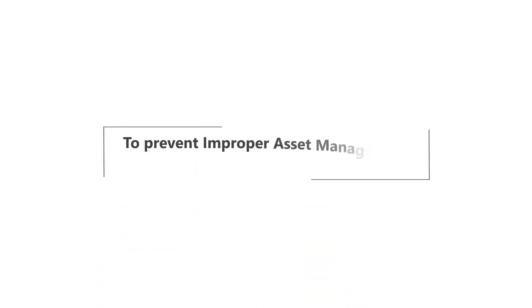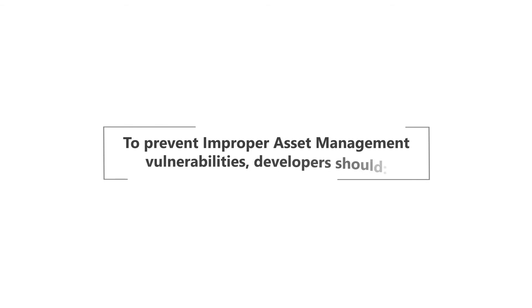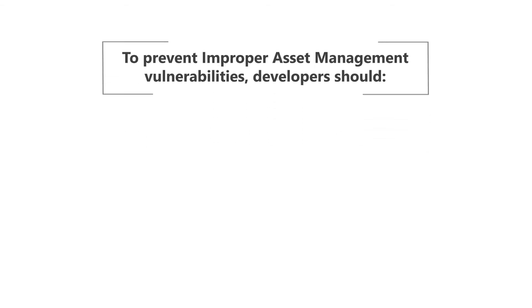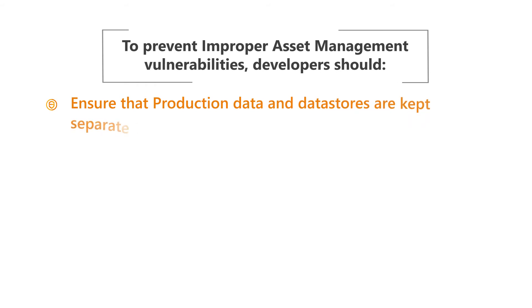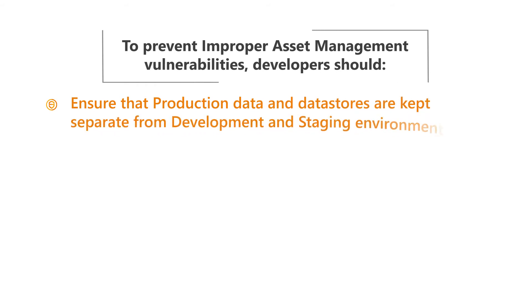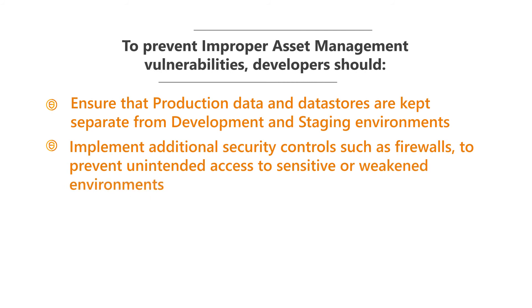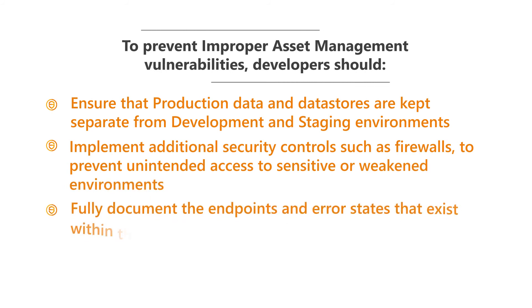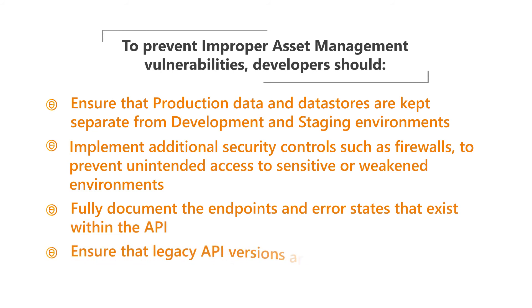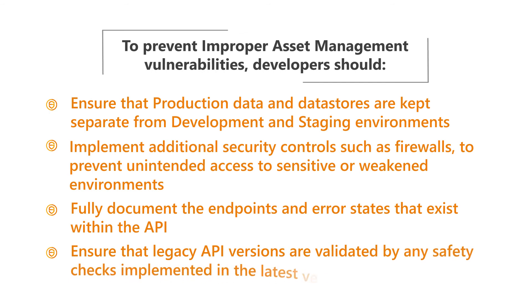To prevent improper asset management vulnerabilities, developers should: ensure that production data and data stores are kept separate from development and staging environments; implement additional security controls such as firewalls to prevent unintended access to sensitive or weakened environments; fully document the endpoints and error states that exist within the API; and ensure that legacy API versions are validated by any safety checks implemented in the latest version.